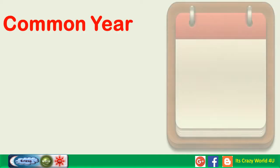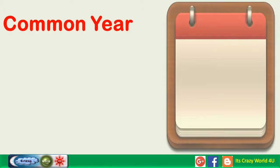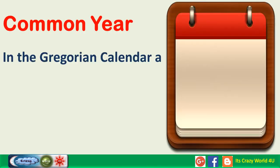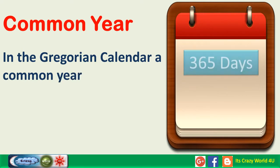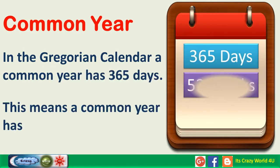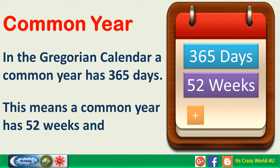Common Year. In the Gregorian calendar, a common year has 365 days. This means a common year has 52 weeks and 1 day.